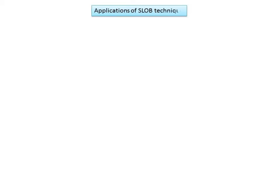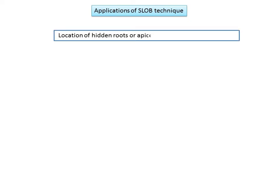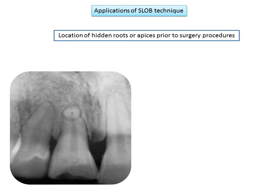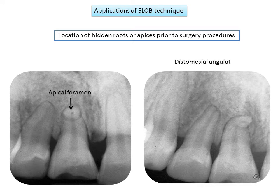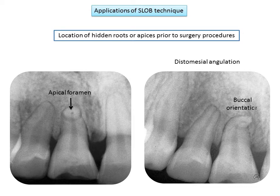The applications of the SLOB technique include: location of hidden roots or apices prior to surgical procedures. In cases of apicoectomy, the apical foramen position must be determined. In the first image, the apical foramen of the upper right central incisor rests on the same plane as the x-ray path, not indicating its buccal or palatal position. In the second image, after moving the tube distally, the apical foramen moves mesially, indicating a buccal curve — opposite to the tube movement.